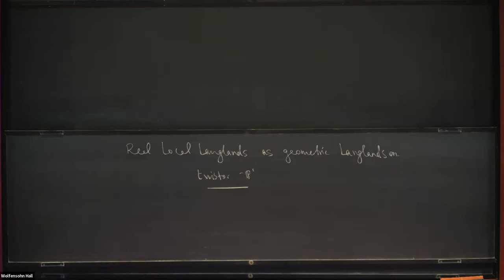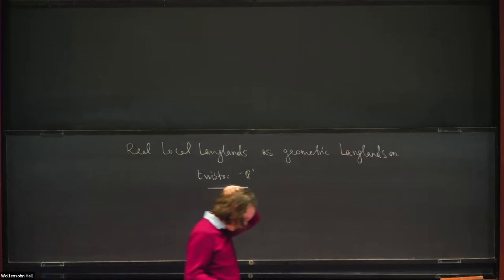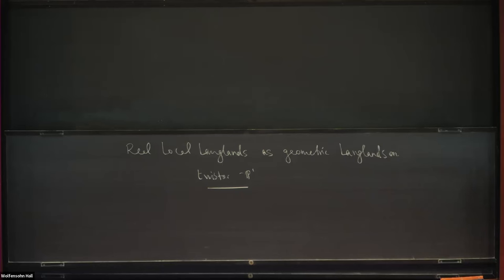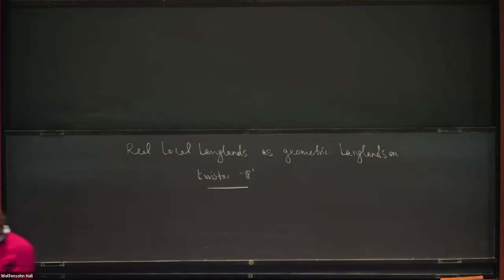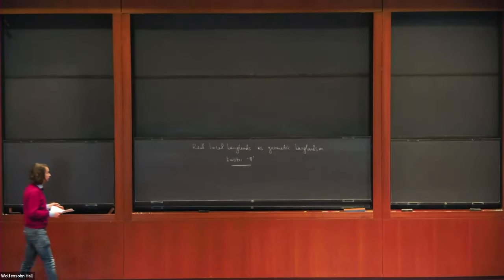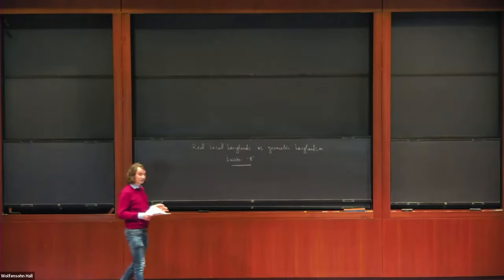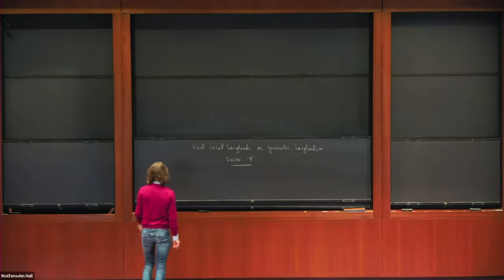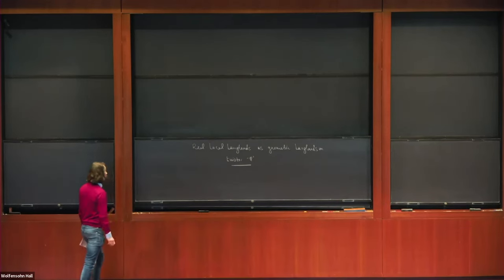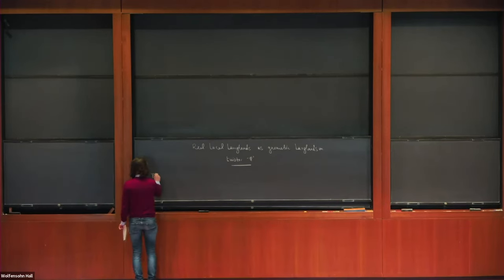My goal in these lectures is to convey my current understanding of the Langlands correspondence over the real numbers, in a way very similar to how I currently understand the local Langlands correspondence over p-adic fields—based on Laurent Fargues's idea from roughly ten years ago that you can realize this as geometric Langlands on the Fargues-Fontaine curve. Let me give a very sketchy account of this p-adic story just to set the stage.